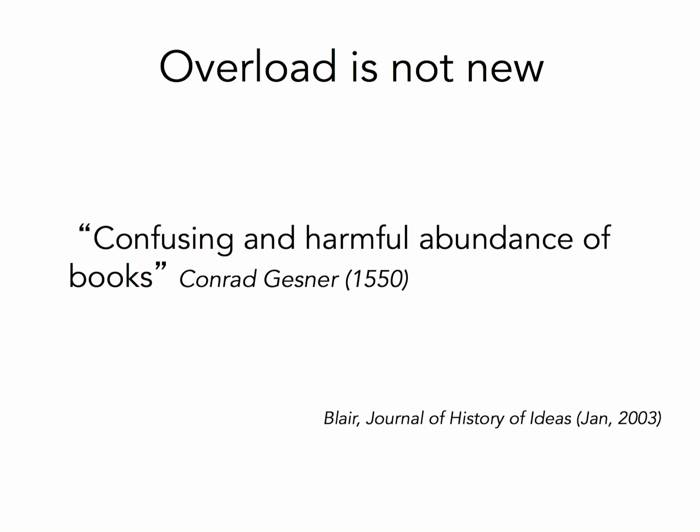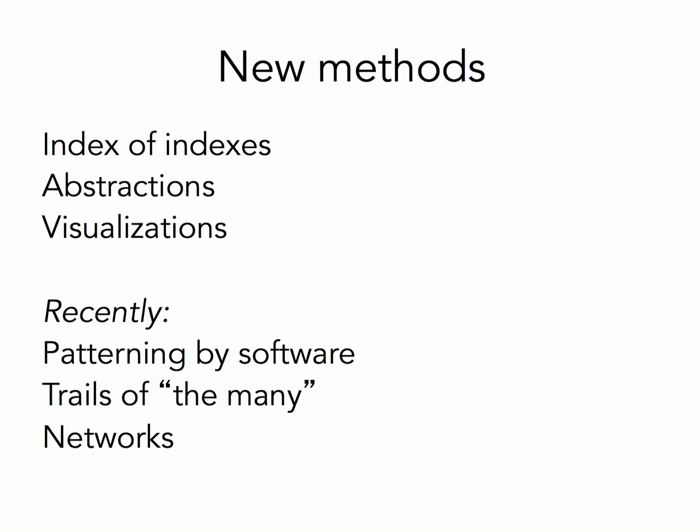This isn't entirely new. Going back to 1550, there were declarations that we have a confusing and harmful abundance of books. People have historically tried to make sense of this kind of abundance through different approaches — for example, with an encyclopedia, creating an index of indexes to pull together or aggregate. Or you might start to create abstractions, where you try to put rough visualizations in place. Even some of the work of da Vinci in early representations of information used this type of approach.